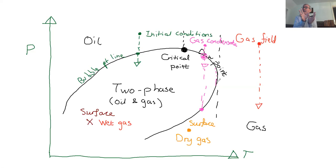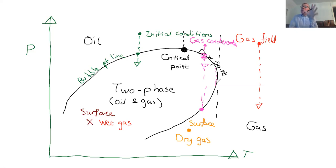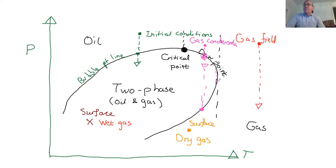This phase diagram isn't produced by magic — you take fluid samples from the reservoir on discovery and measure the phase diagram in the laboratory, varying temperature and pressure to observe where two phases appear versus single phase. You know this diagram before you start developing the field, and you need to know it.